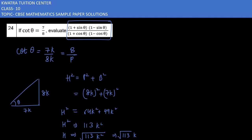Now find sin θ and cos θ respectively. Sin θ is perpendicular over hypotenuse, which is 8k over √113 k. Cos θ is base over hypotenuse, which is 7k over √113 k. K cancels out, so sin θ = 8/√113 and cos θ = 7/√113.